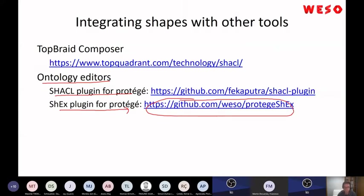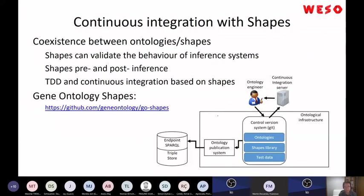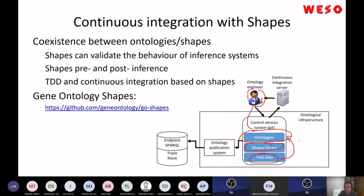Want to contribute? Please do. Some work we are currently doing is validation of shapes combined with ontologies. The idea is that an ontology engineer works with ontologies in a Git repository, with some test data and shapes that check data conformance with the ontology — both before and after inference. You can have shapes that check conformance before inference and shapes that check conformance after inference, so you can even check the behavior of the inference system.